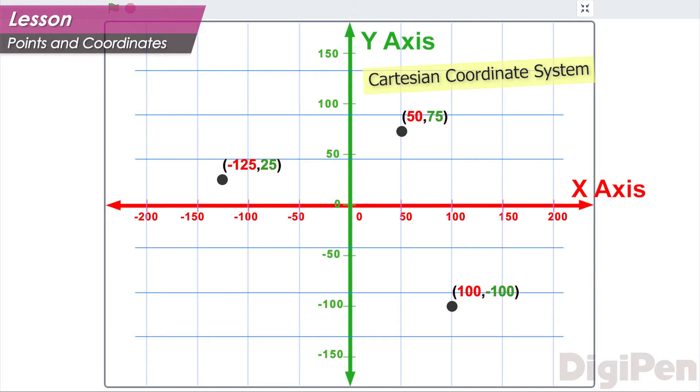For now, just remember that the Cartesian coordinate system gives you the tools to numerically define a position in a way that a computer can understand.